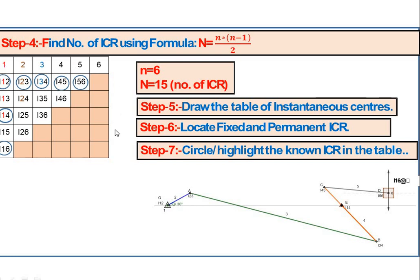In the table, the 15 ICRs are: I12, I13, I14, I15, I16, I23, I24, I25, I26, I34, I35, I36, I45, I46, and I56. Every link makes a combination with each of the remaining links.